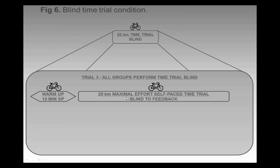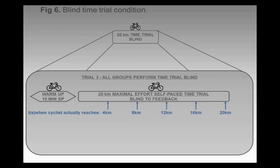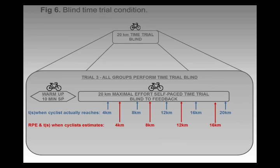They did a 10-minute warm up, and then we asked them at various stages — at 4, 8, 12, 16, and 20 kilometres — to indicate their RPE. We also asked them to state their RPE out loud when they felt they'd reached those distances. They didn't know we were asking at those specific distances, and then we were able to work out what the error was.